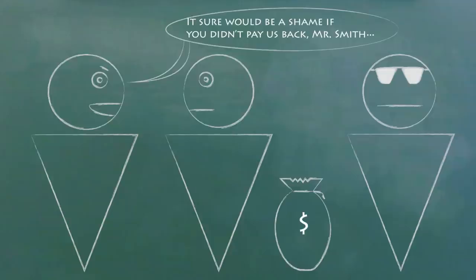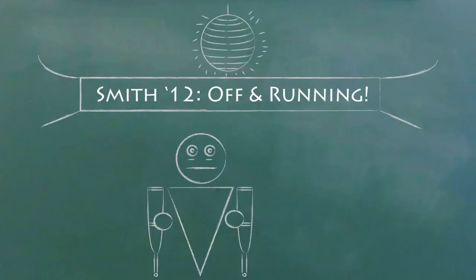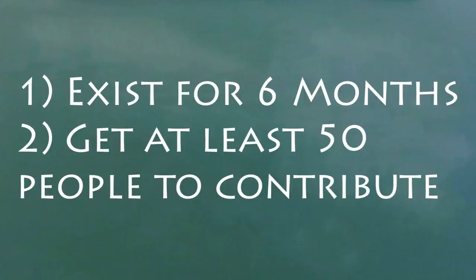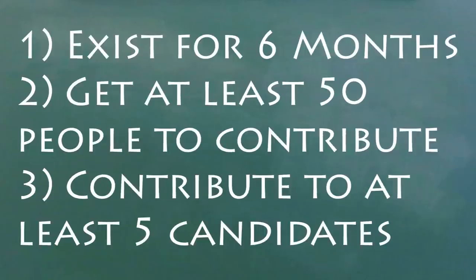It's important to keep track of what counts as a contribution because candidates can only get so much from any one person and then they have to return the extra. Individuals and groups can contribute up to $2,300 every election cycle to a candidate. Political action committees, or PACs, can be formed as long as they exist for six months, taking contributions from more than 50 people, and contribute to at least five candidates — and they can give $5,000 per candidate per election.